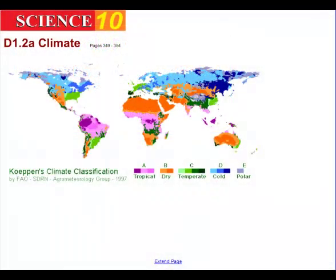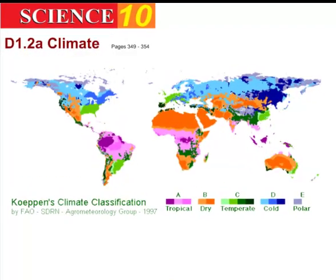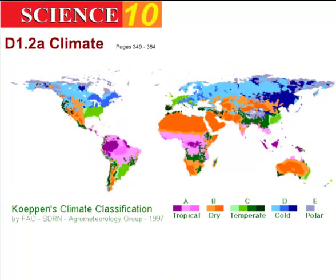In this topic we're going to be talking about climate, the effects that it has, and where it's located. Here's a map of the earth with a climate classification system, and you can probably tell by looking at the different colors that the purplish colors are tropical areas — things that you would find, for example, in South America and in Africa.